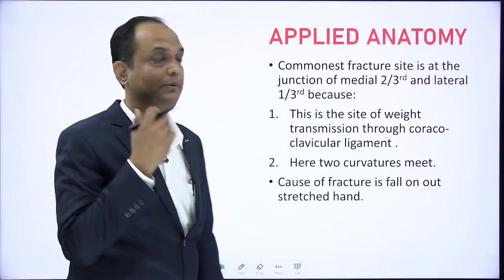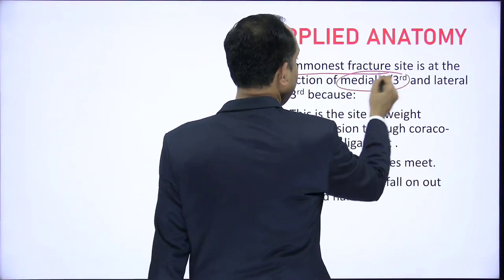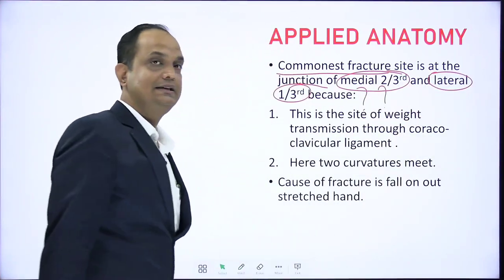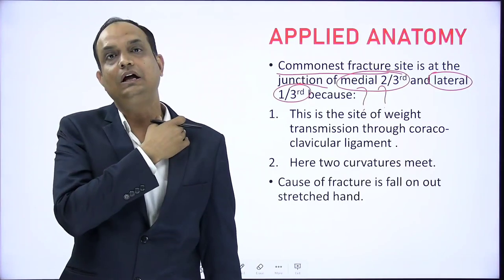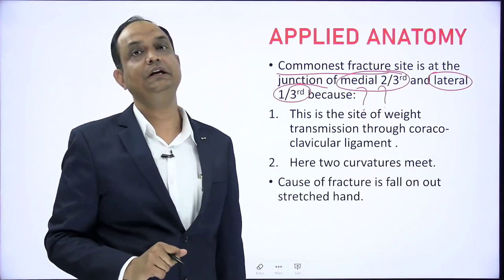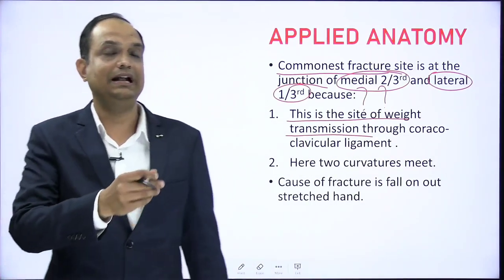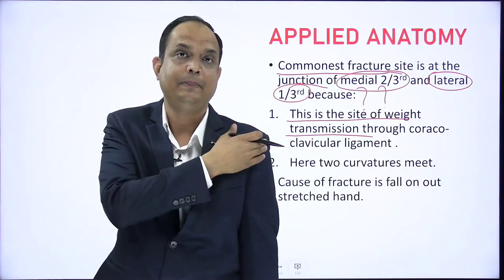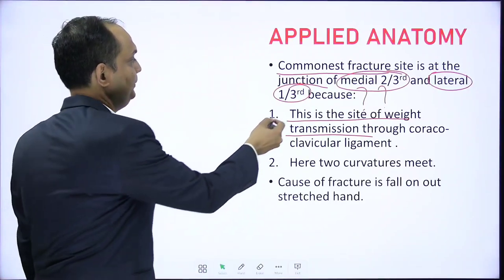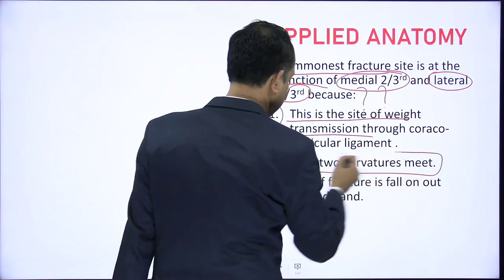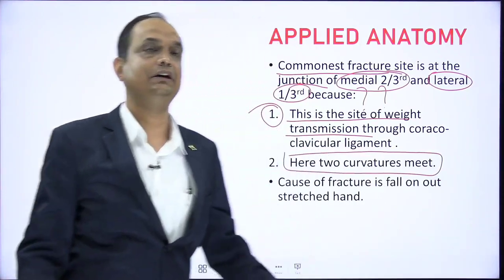Regarding fracture of the clavicle: the commonest fracture site is the junction of the medial two-thirds and lateral one-third. The reason is that the coracoclavicular ligament — which transmits the weight of the upper limb to the clavicle — is attached at that junction. This is the site of weight transmission through the coracoclavicular ligament. The second reason is that the two curvatures of the clavicle meet here. The cause of fracture is a fall on an outstretched hand.